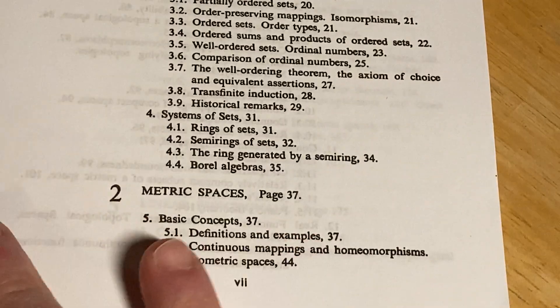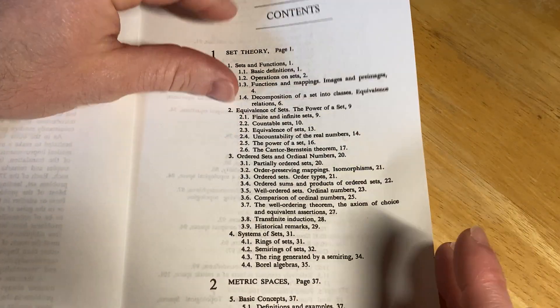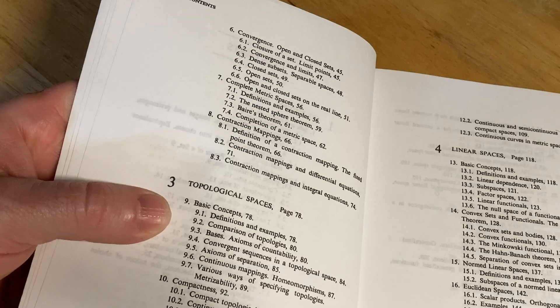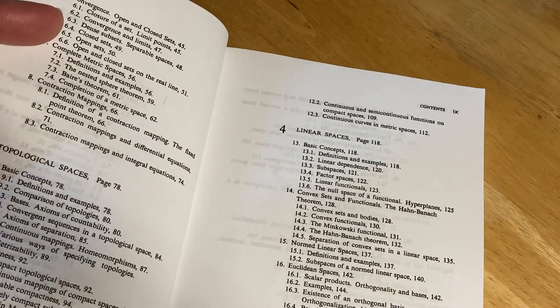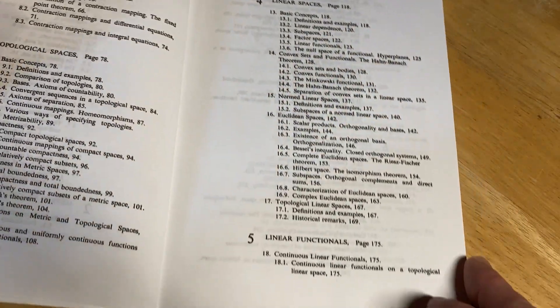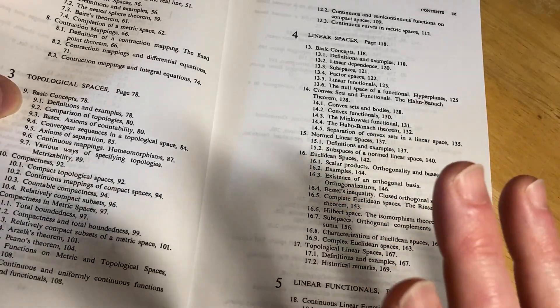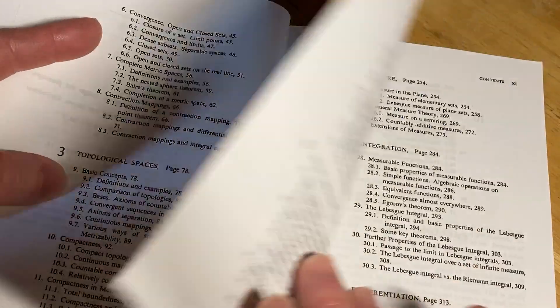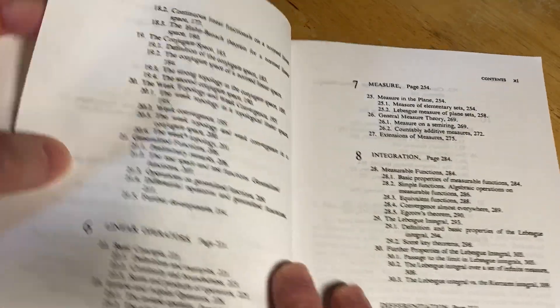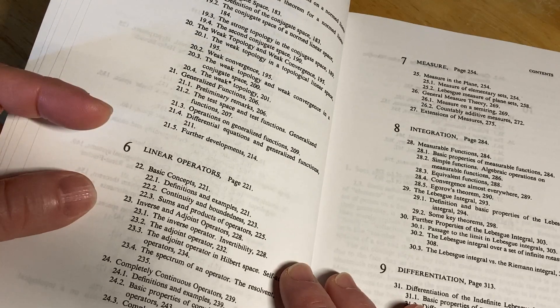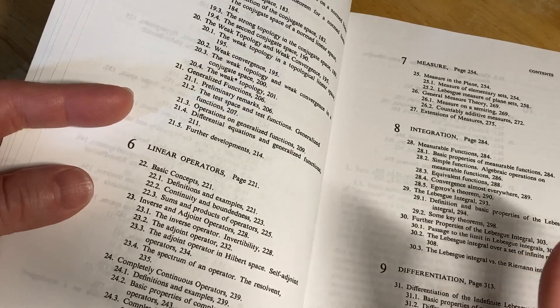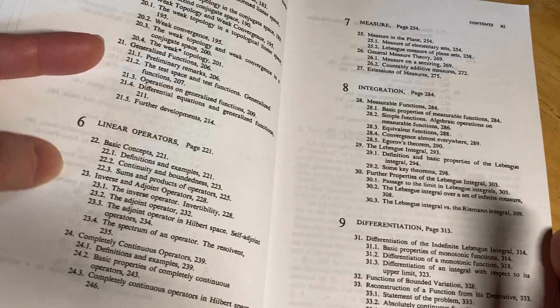Ordered sets and ordinal numbers. Then it goes into metric spaces. Again, very good progression. Topological spaces, linear spaces, linear functionals. So to read this book, by the way, like if you wanted to buy this and learn from this book, you do need to know how to write mathematical proofs. That is definitely the strongest requirement in my opinion. Because if you know how to write proofs, you're going to know some more math. You're going to know calculus. You're going to know set theory. So having some proof writing skills will help you. And the more math you have, the easier this book will be.